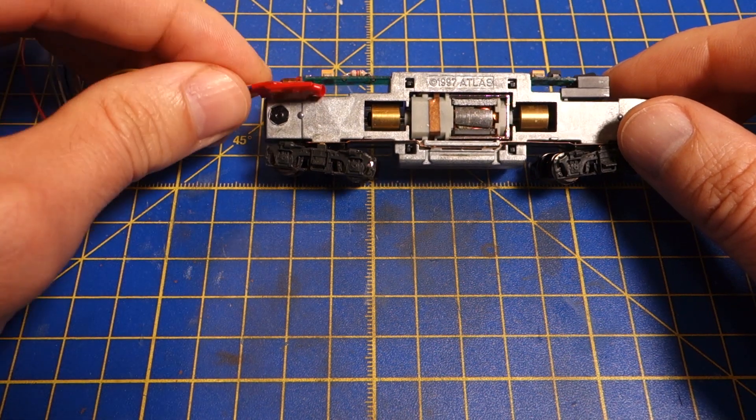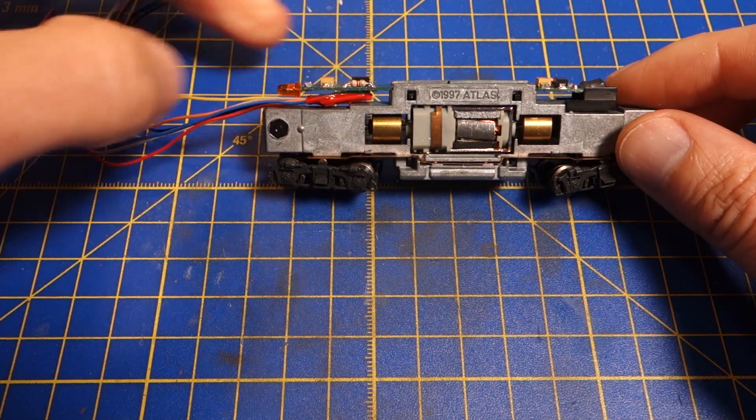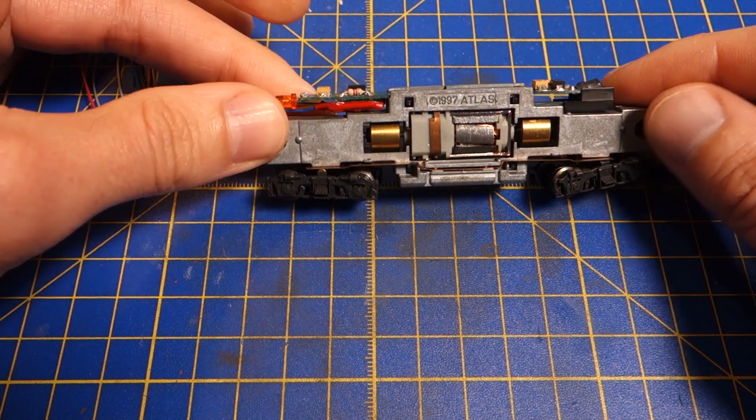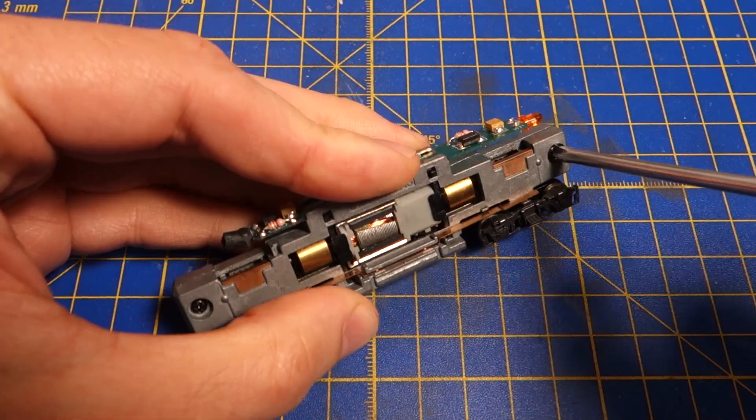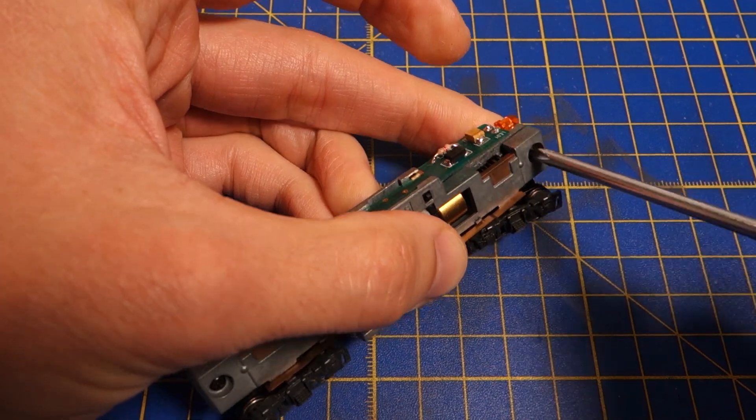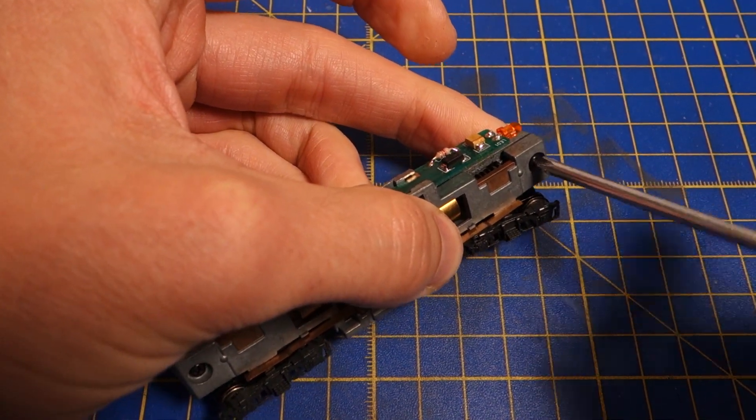The general idea is to use the space under the lightboard on the rear of the frame for the decoder and reuse the lightboard for all the necessary connections. This requires a couple of modifications to the lightboard first, so I remove the lightboard from the frame.